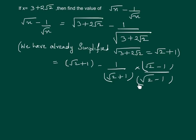And why we are doing this is to make the denominator free from square roots. This gives us √2 + 1 minus... in the denominator.